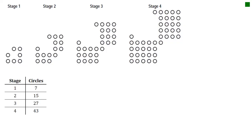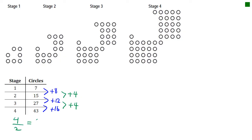Now we'll analyse this next pattern. As usual, we start with our T-table: stage 1 has 7 circles, stage 2 has 15, stage 3 has 27, and stage 4 has 43. First differences are plus 8, plus 12, and plus 16. Since the first differences are not constant, I find the second differences: plus 4 and plus 4. Notice this is the first pattern where the second difference is more than 2. Since the second difference is 4, half of 4 is 2, meaning we're expecting 2 squared terms.